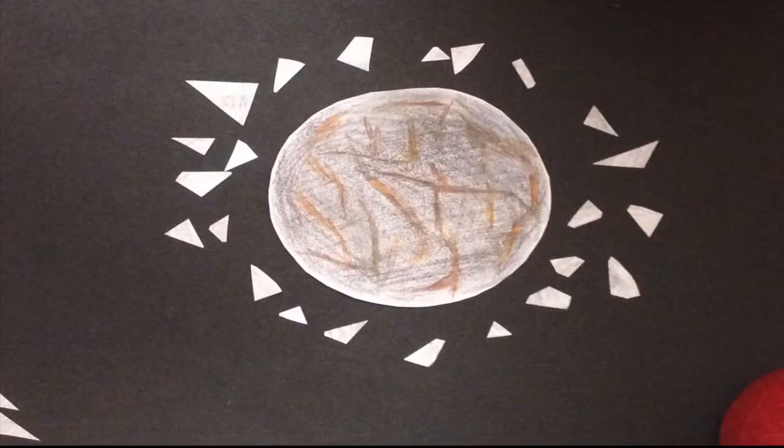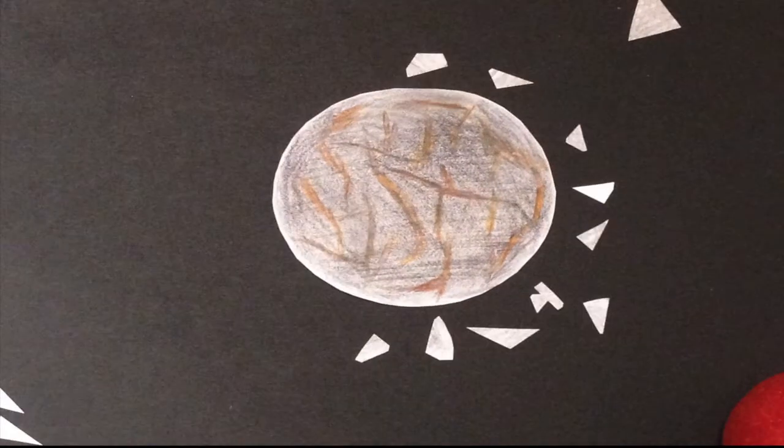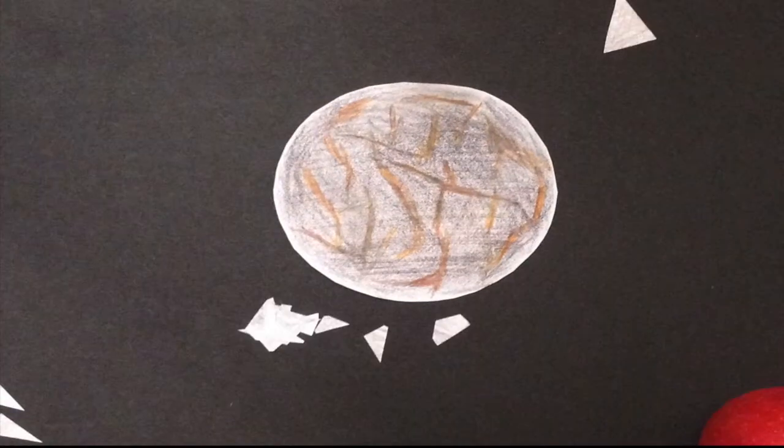The debris from this impact began to orbit the Earth, much in the same way the Earth did when it was forming around the Sun, and the same clumping of material occurred to form our Moon.